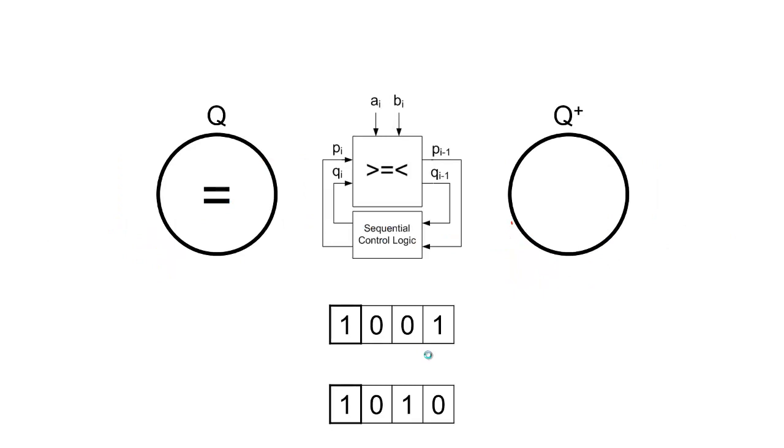To begin to understand this, let's pretend we have a 4-bit register that's currently storing the values of 9 and 10, and we want to find out is A greater than (the top one is A, and the bottom one is B), is A greater than, equal to, or less than B. So we want to start off with the assumption that A is equal to B, and we're going to store that as our initial starting state.